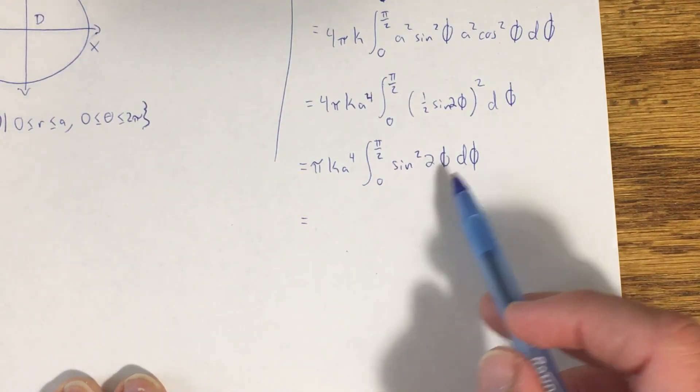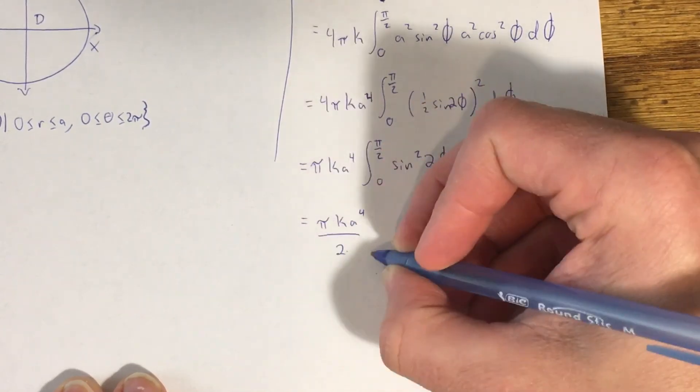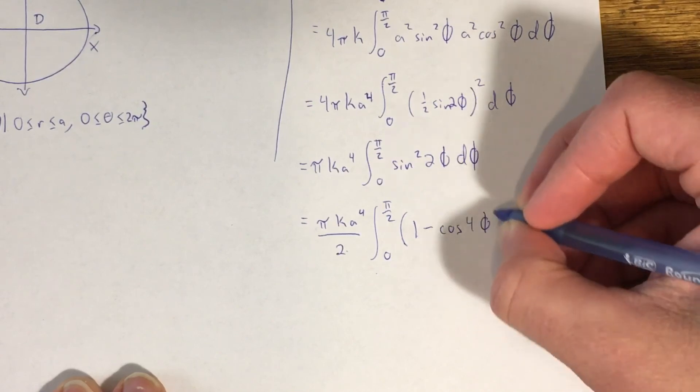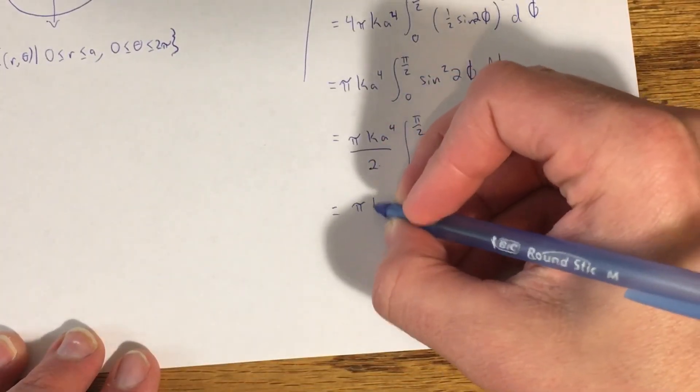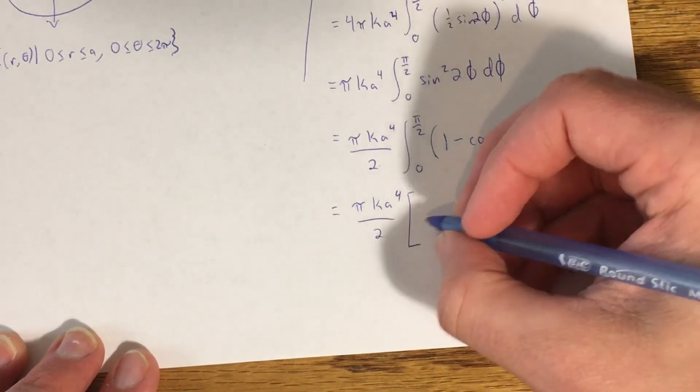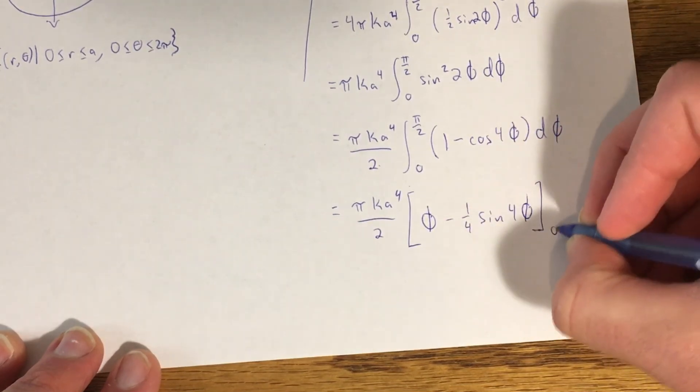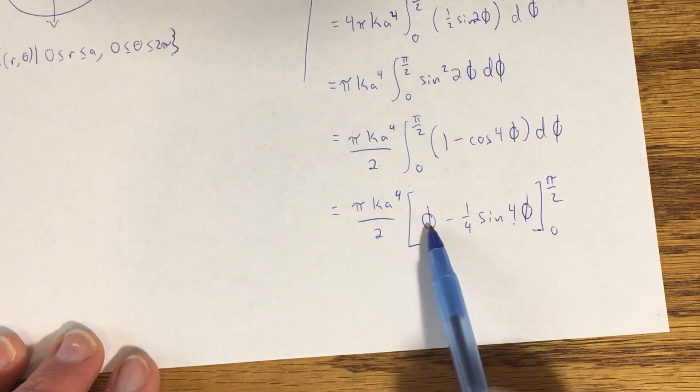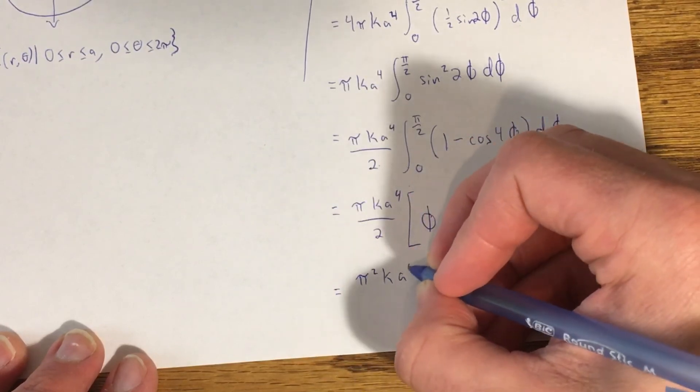I need to use a power reduction formula to shrink down the size of this thing. Sine squared is equal to 1 half times 1 minus cosine of twice this angle. The 1 half that I would normally get, I'm going to bring that out. πk a to the fourth over 2 integral from 0 to π over 2 of 1 minus cosine of 4φ dφ. After integrating, I'll get this. So this becomes φ right there. This becomes minus 1 fourth sine of 4φ. From 0 to π over 2. If I plug in π over 2, 4 times π over 2 is 2π. Sine of 2π is 0. So really, I just get π over 2 minus 0 or π over 2. If I plug 0 into either of these, they both become 0. So all of this reduces to π over 2, which multiplies to this to give me π squared k a to the fourth over 4.